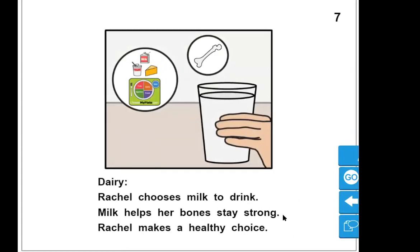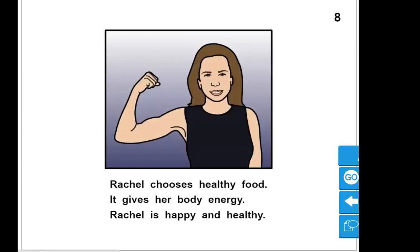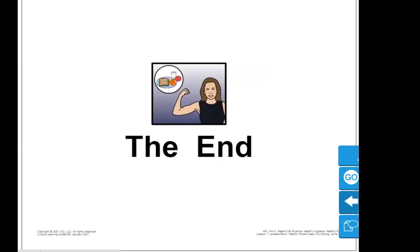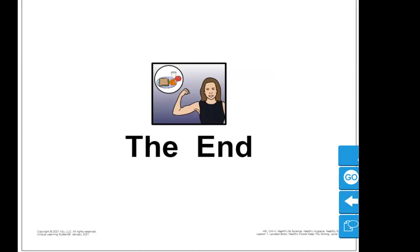Rachel chooses healthy food. It gives her body energy. Rachel is happy and healthy. So she's without sickness. She is healthy.